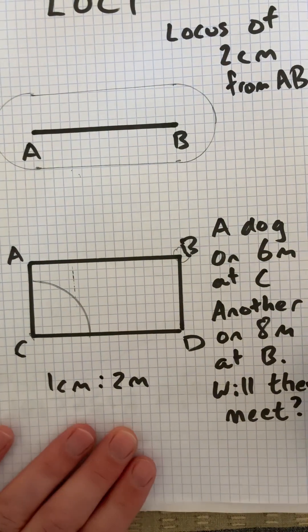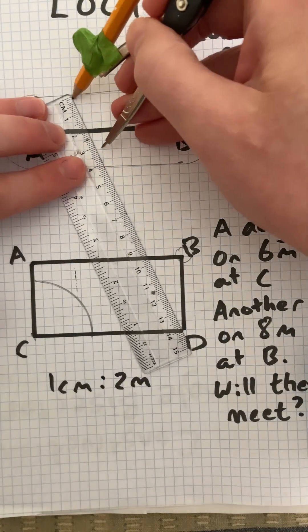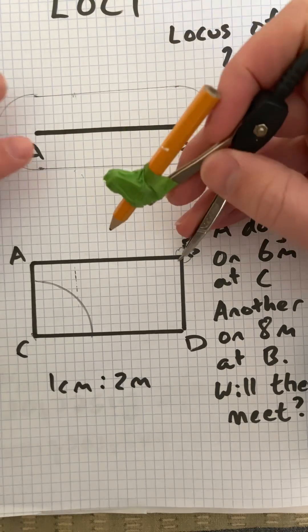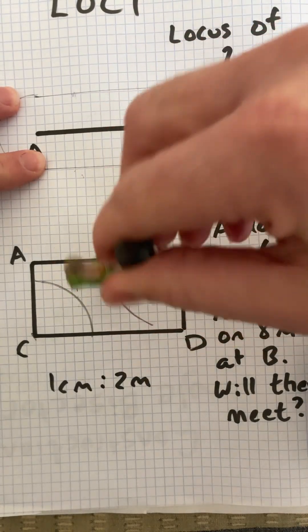The dog at point B will have an arc that is 4cm, because each centimeter represents 2m. We'll see if there's any danger that the two dogs would meet.